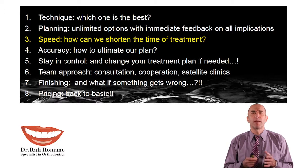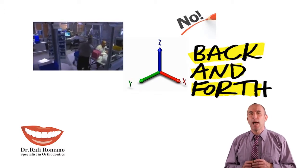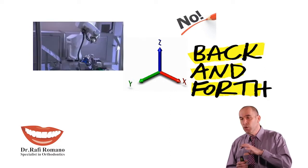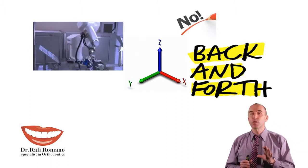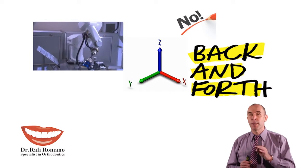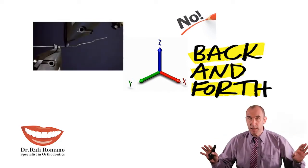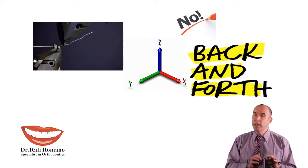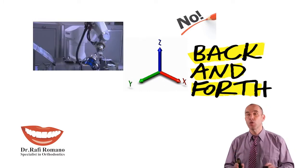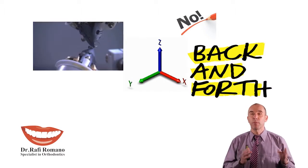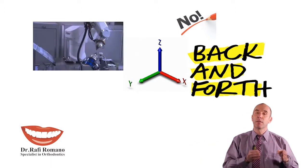Speed — how we can shorten treatment time, which everybody talks about. One of the beautiful things I've realized in SureSmile is that I have almost no back and forth, almost no trial and error. If you plan the treatment correctly, you get precision, and precision shortens treatment time. Most of my treatment times are now around half of what they were before — because I spend 80% more time on planning and only 20% on the treatment itself.